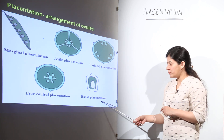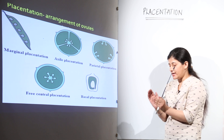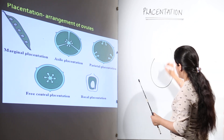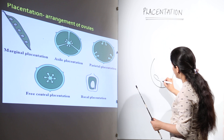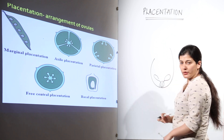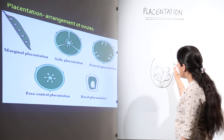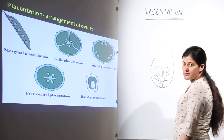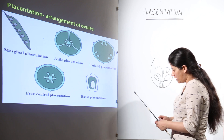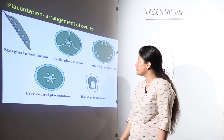The last type is basal placentation, where the ovarian locule bears the ovules at the base. The placenta is located at the base of the ovarian locule, and the ovules are present there. This is known as basal placentation — the ovarian locule bears the ovules at its base.